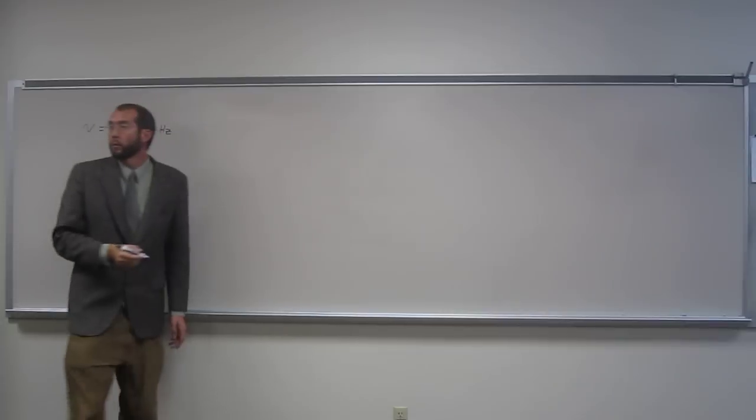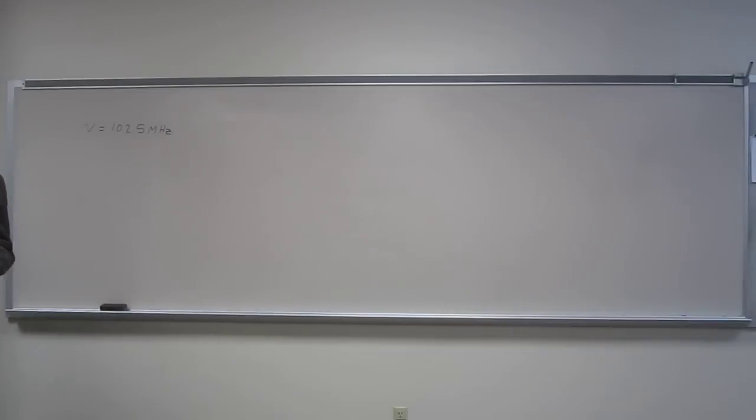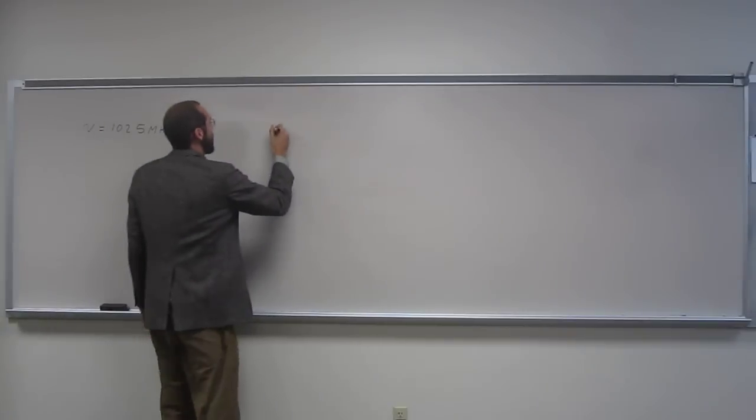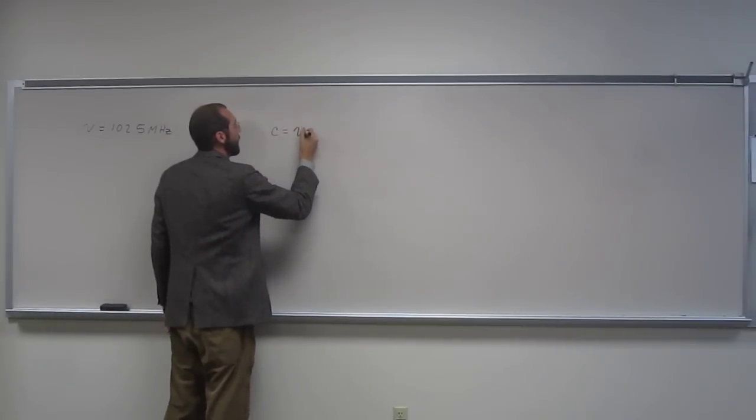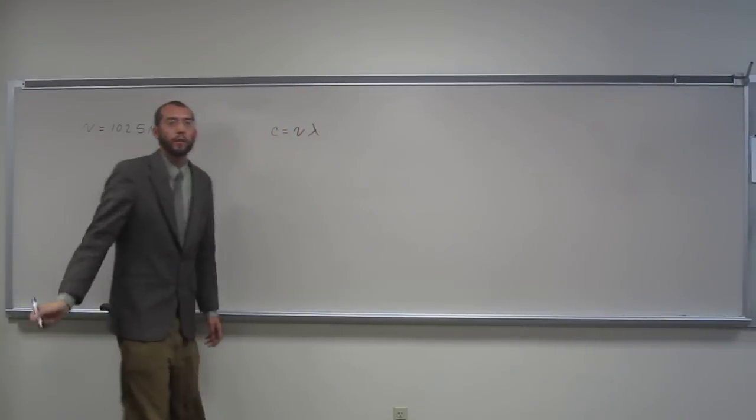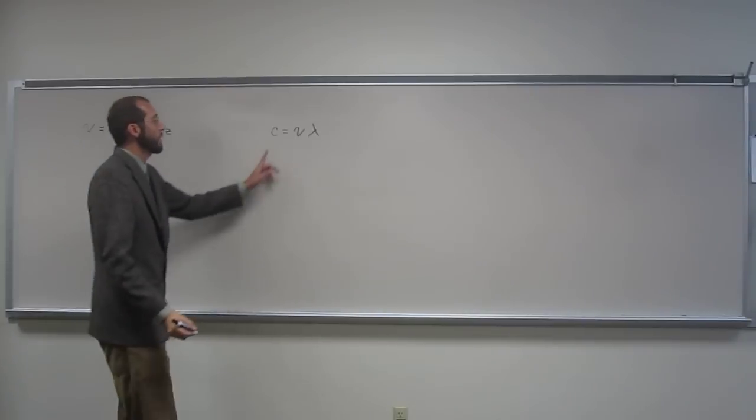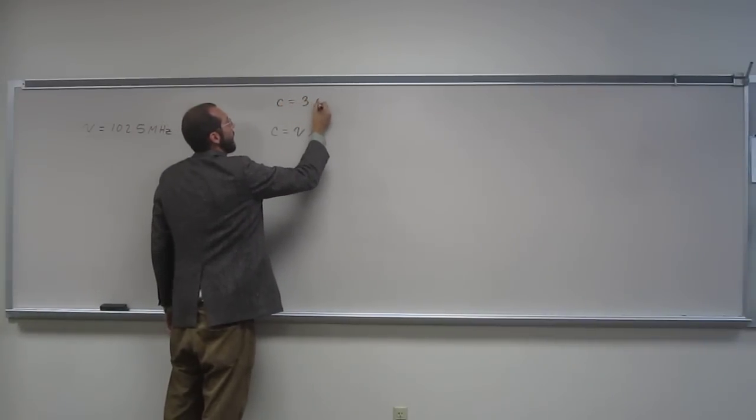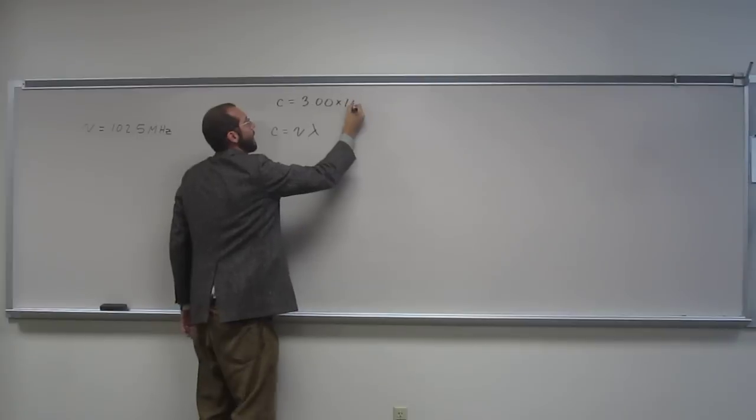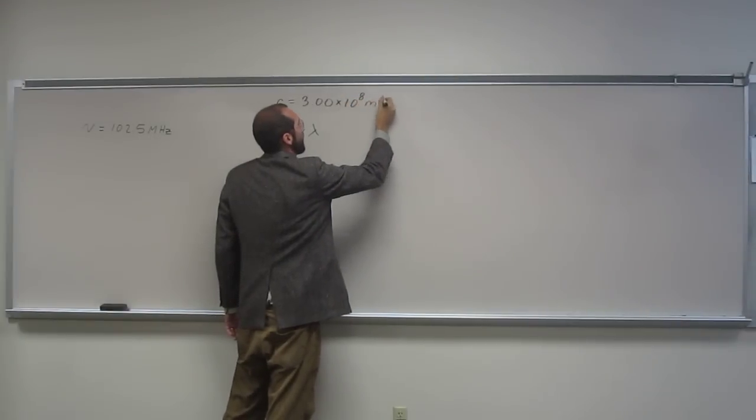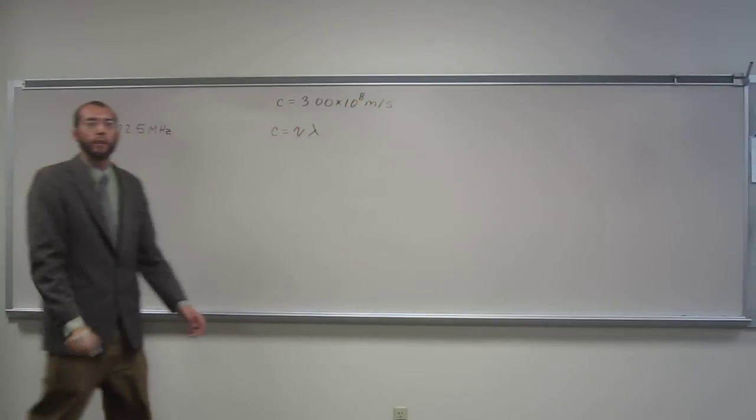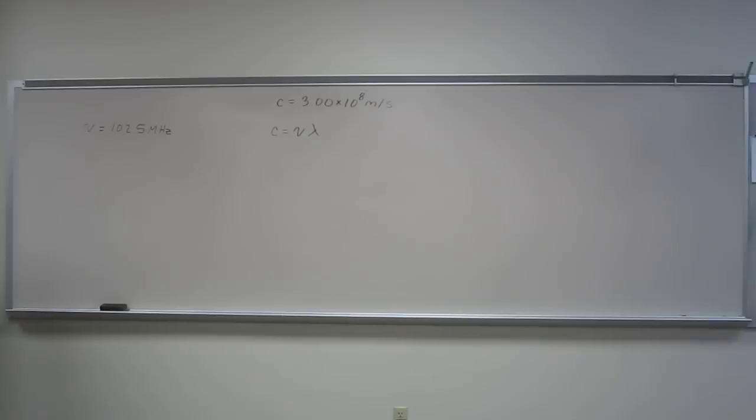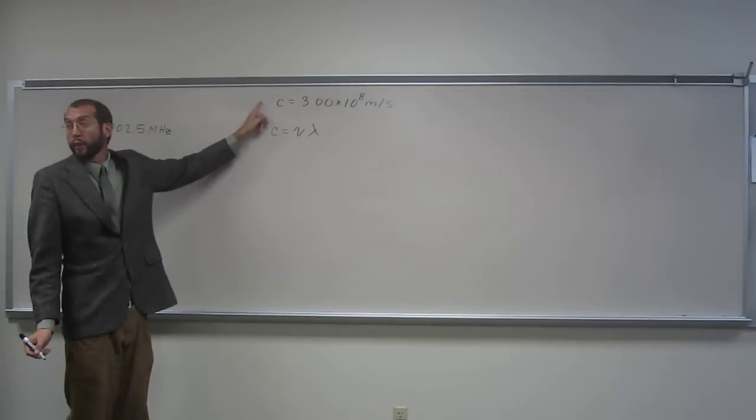So we know that equation. What's the equation? C equals nu times wavelength, right? And we also know what C is. What is that? Like that, right? 3.0 times 10 to the 8th meters per second, the speed of light in a vacuum.